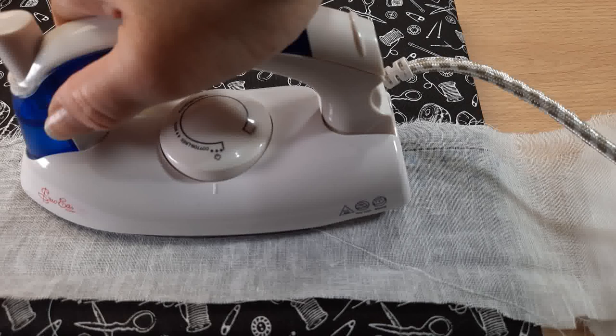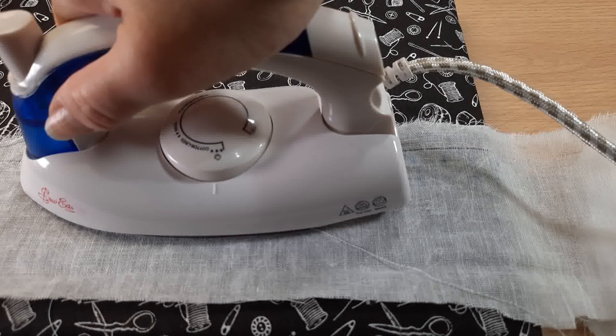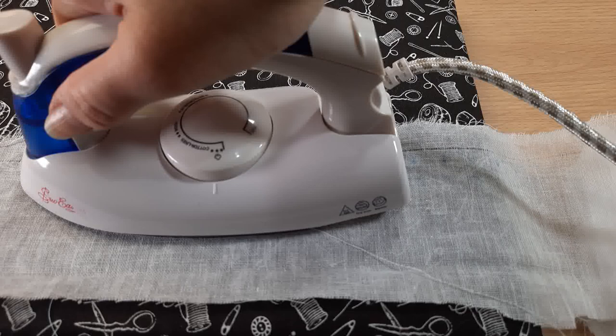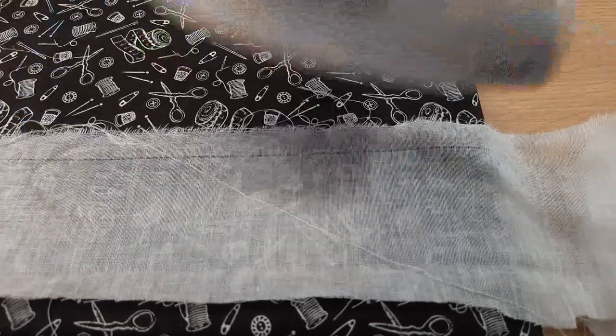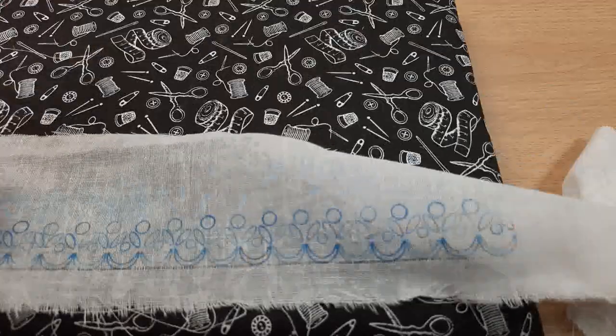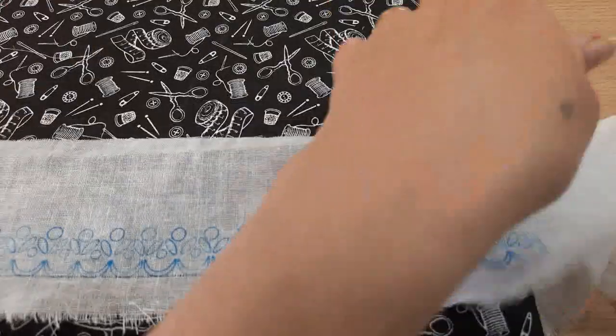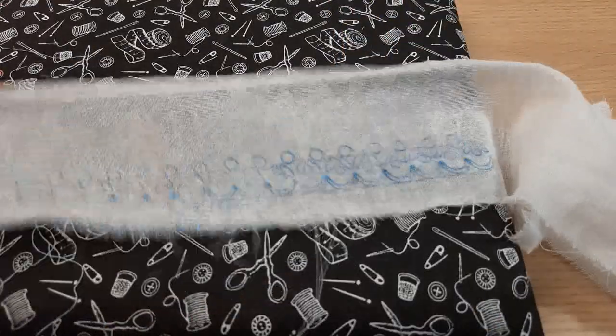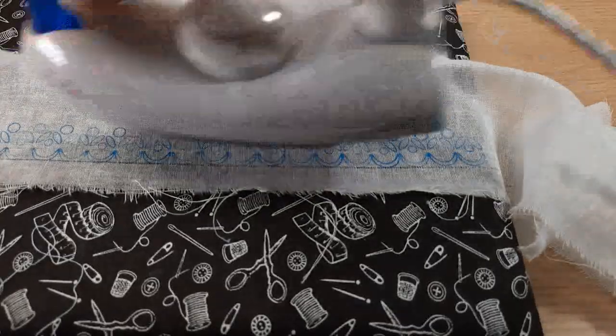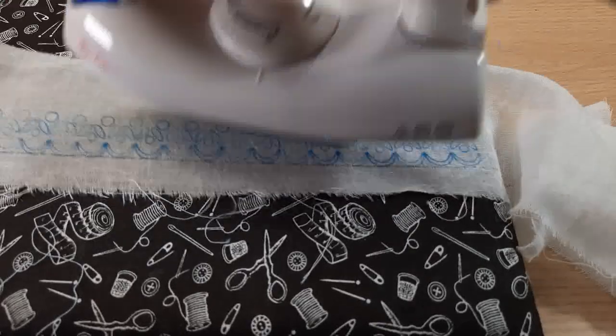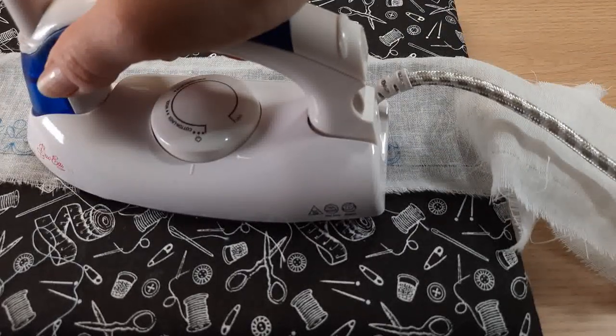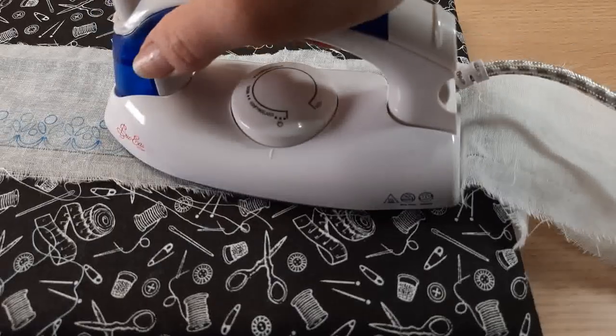So I iron, I press from the back first simply because if there is any residue ink that hasn't dried that's not going to go on my ironing plate. Then I'll turn over and do the same on the front side.